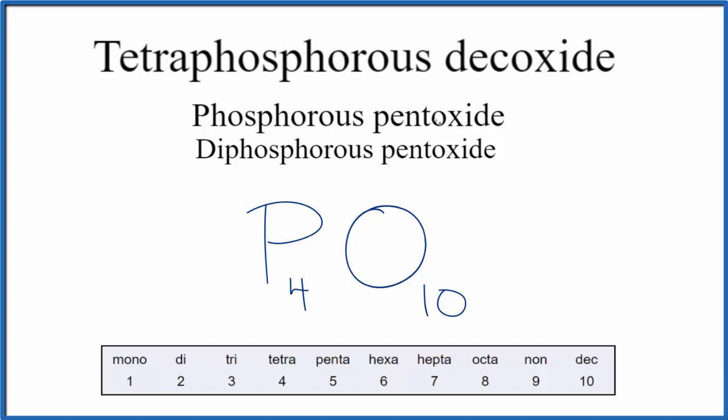This is Dr. B with the formula for tetraphosphorus decoxide, P4O10. Thanks for watching.